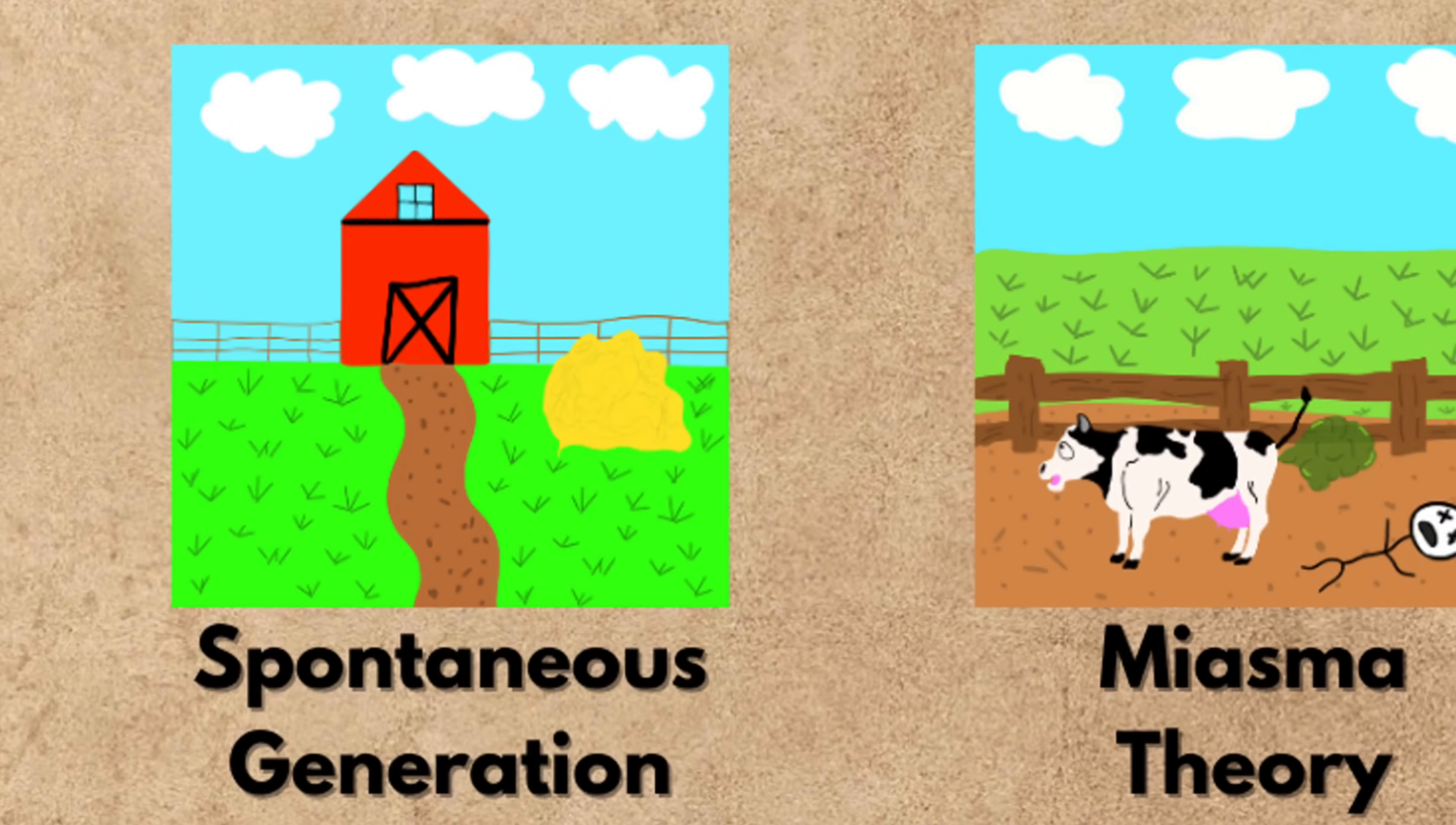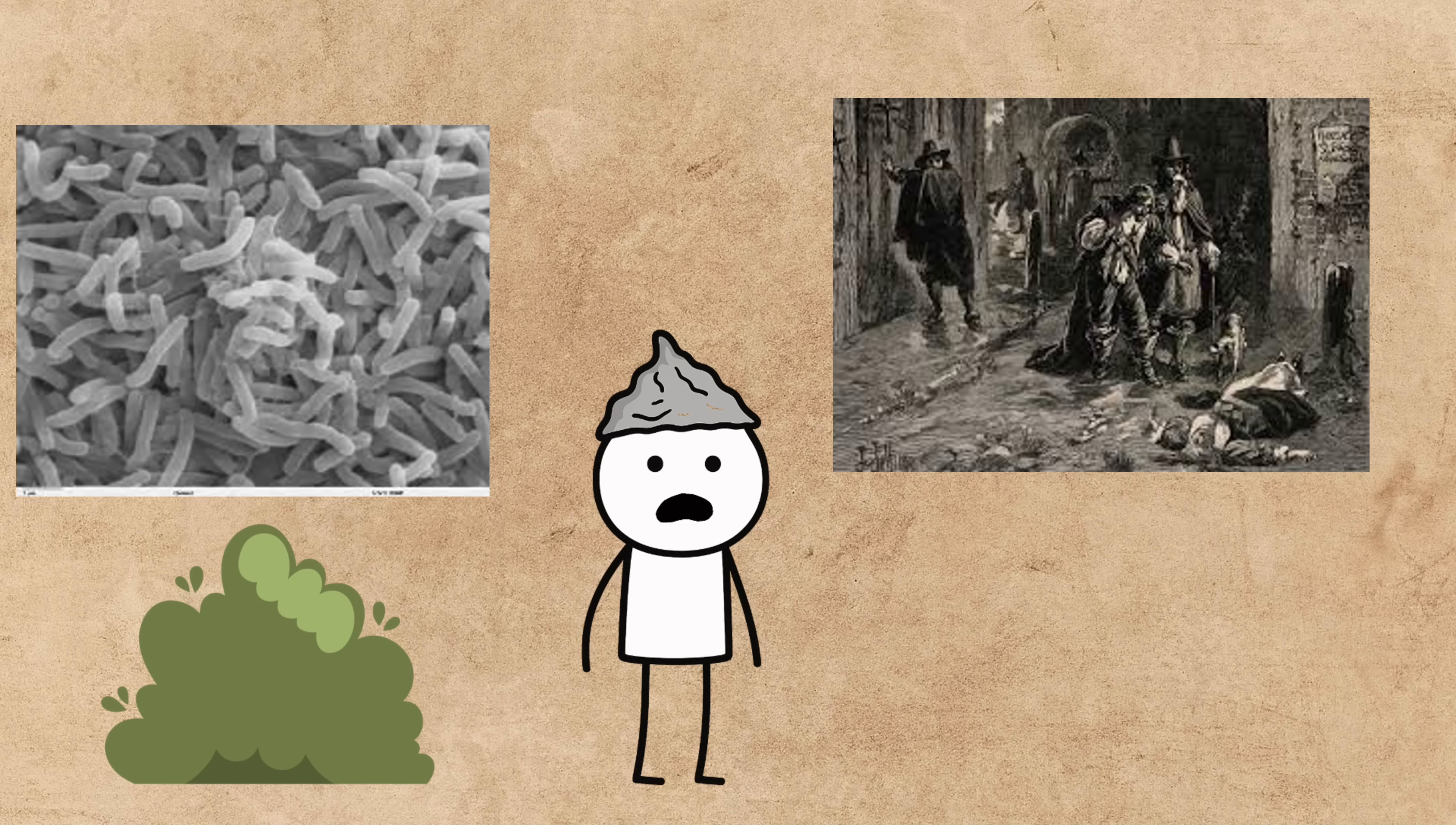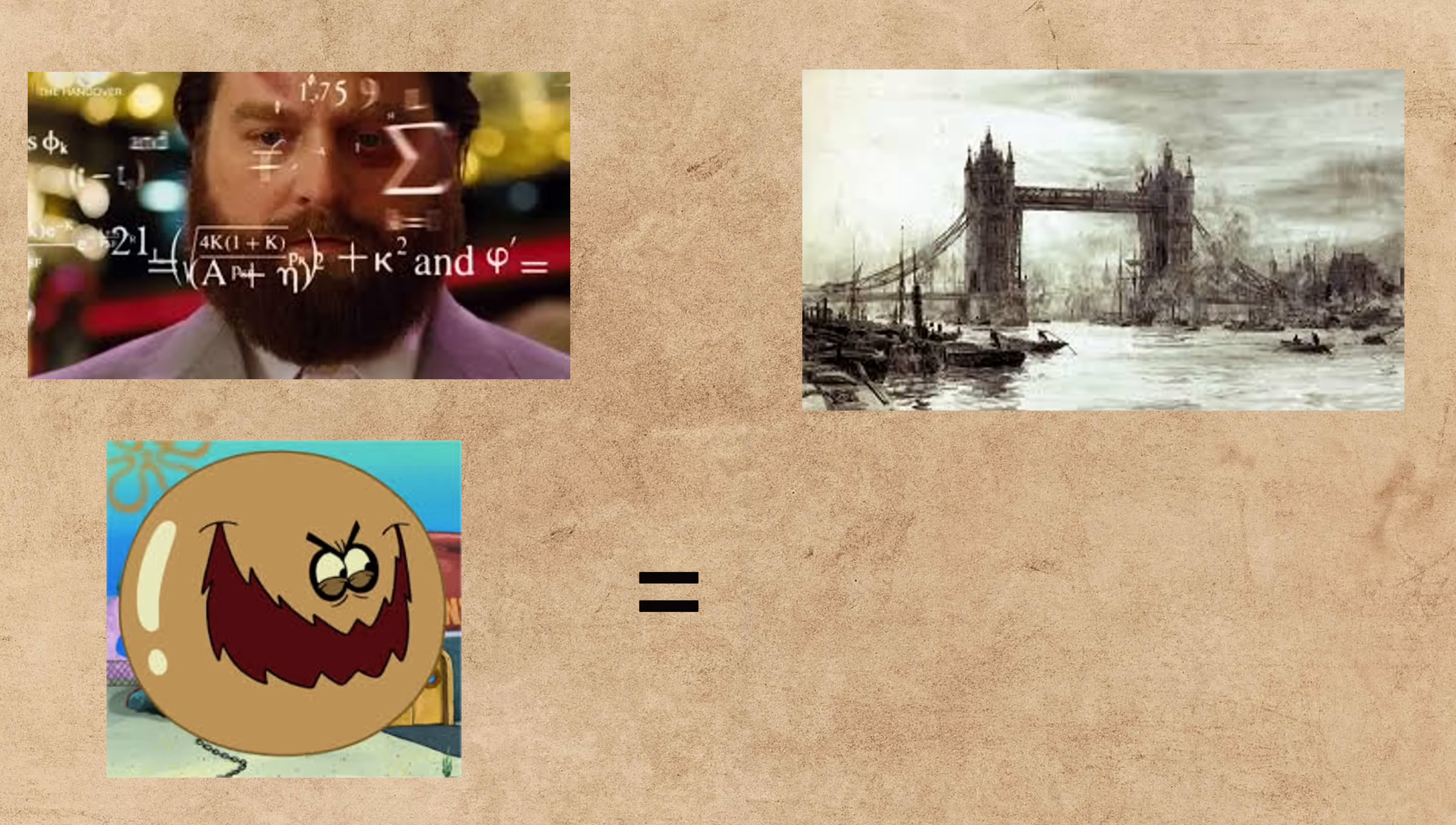Next on our tour of bad ideas is the miasma theory of disease, which basically held that the world's deadliest illnesses were caused by a bad smell. For centuries, people believed that diseases like cholera and the plague were spread by miasma, a noxious form of bad air that oozed out of rotting organic matter. If you lived in a 19th century city like London, this almost made a twisted sort of sense. The streets were filled with waste, and the River Thames was basically an open sewer. These places stank, and they were also hotbeds of disease. So people connected the dots. Foul smells must equal sickness.